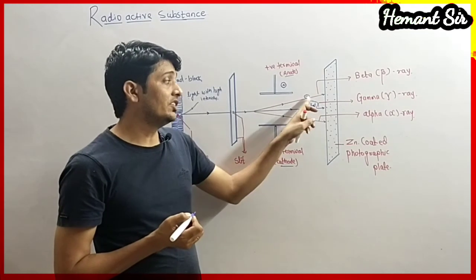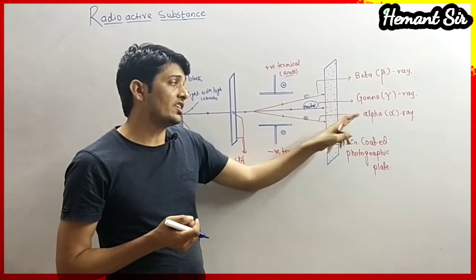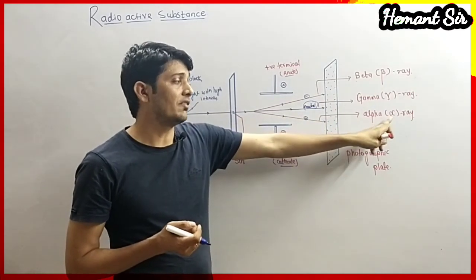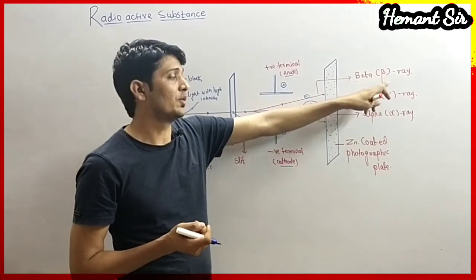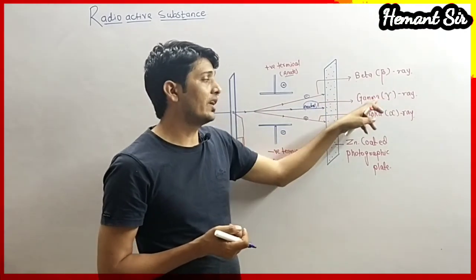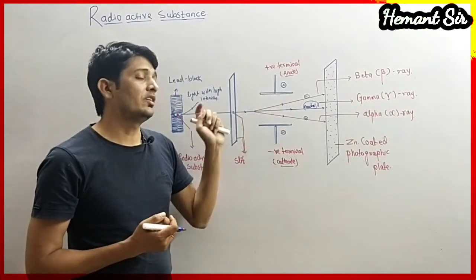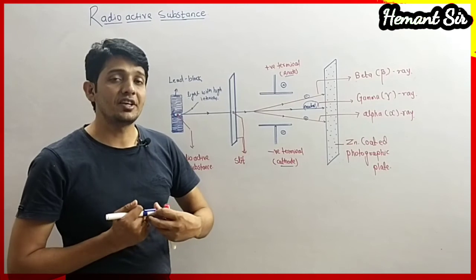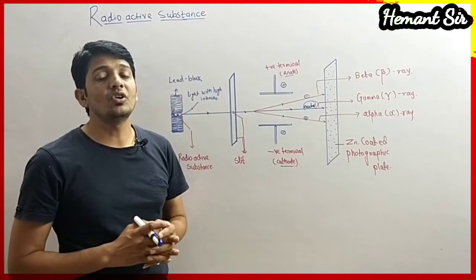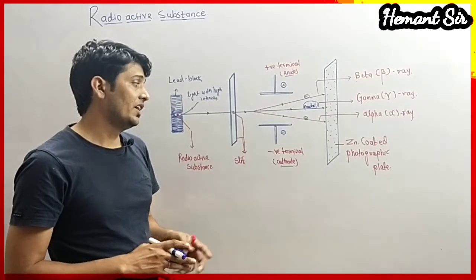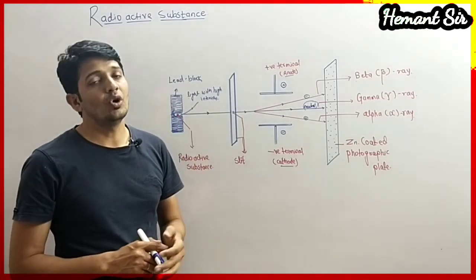We know that negatively charged rays are called beta rays. Positively charged radiation is called alpha rays, denoted by the symbol alpha. Beta is denoted by the symbol beta. And the neutral rays are called gamma rays — they do not get deflected by positively or negatively charged terminals of any electric source. This is the way we identified the charge on the radiation.